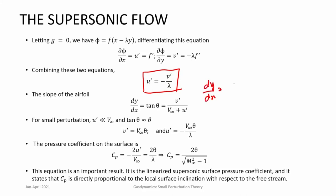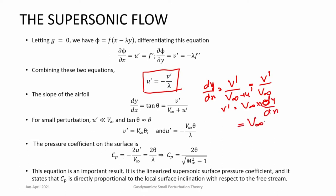We know the boundary condition at the surface of the airfoil: the velocity must be tangential. So dy/dx = v prime / (V∞ + u prime), and since u prime is very small, this equals v prime / V∞, which equals tan(θ) ≈ θ for small angles. Therefore v prime = V∞ · θ, and u prime becomes −V∞ θ / λ. We had seen in the previous class that Cp for small perturbation can be written as −2u prime / V∞.